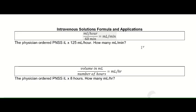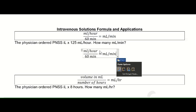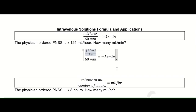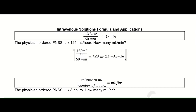Let's go over the formula used for intravenous fluid calculations. For mL per minute: the physician ordered plain NSS 1 liter at 125 mL per hour. The mL per hour is 125, divided by 60 minutes. Using a calculator, 125 divided by 60 gives a value of 2.08, so that would be approximately 2.1 mL per minute.